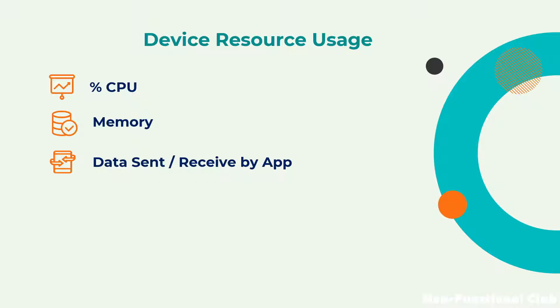Next would be data sent and received by the app. If we are performing a specific functionality and there is a huge chunk of data being sent and received that is not actually required, we can monitor our application using this. And next would be battery usage — how much battery is particularly used by our application also matters a lot as a performance matrix for device resource usage. All four parameters fall under device resource usage.